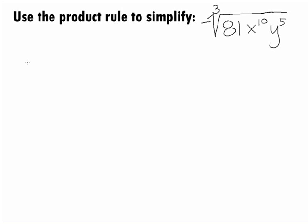In this example, we want to use the Product Rule for Radicals to simplify the negative cube root of 81x to the 10th y to the 5th.